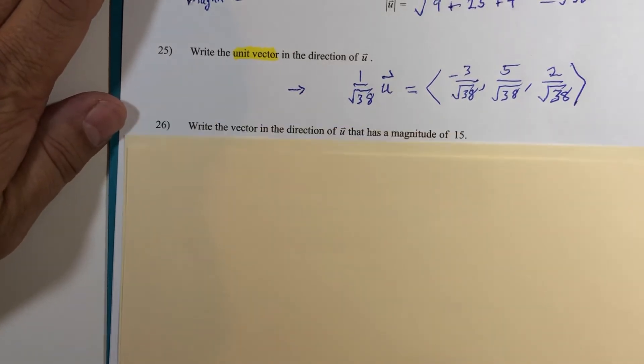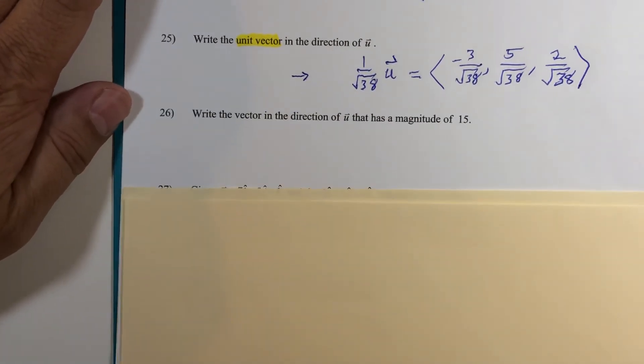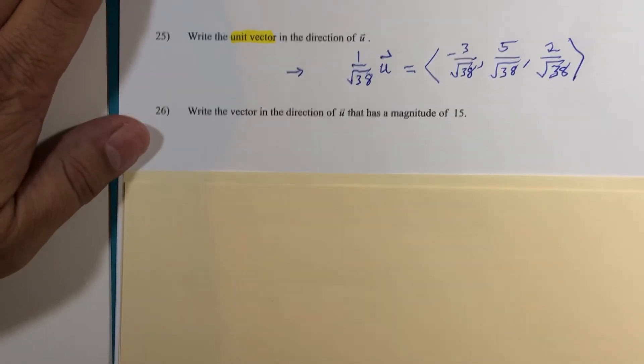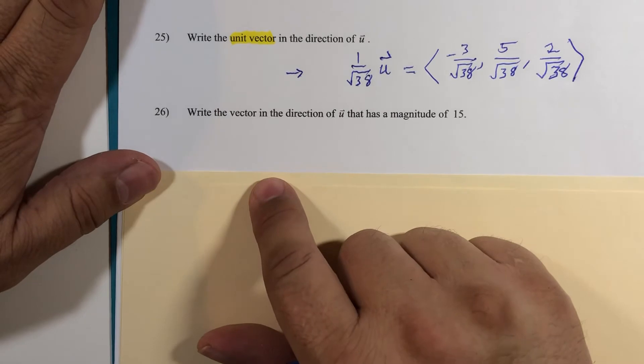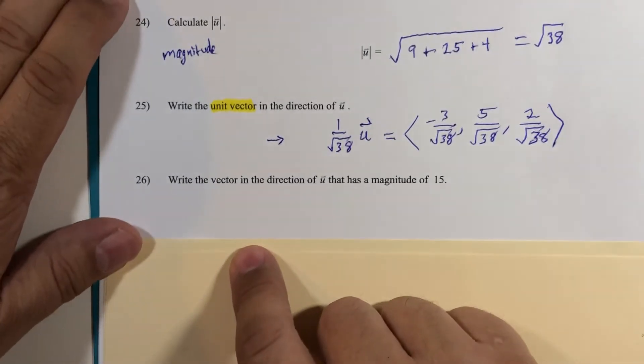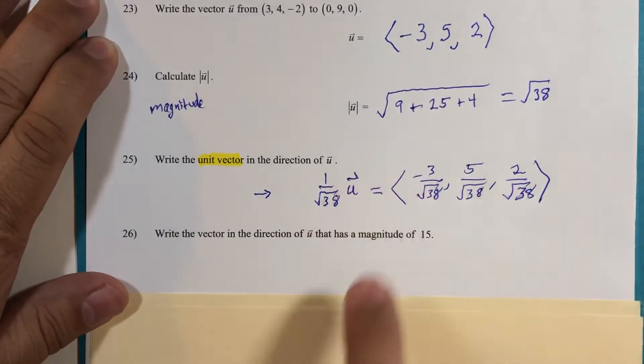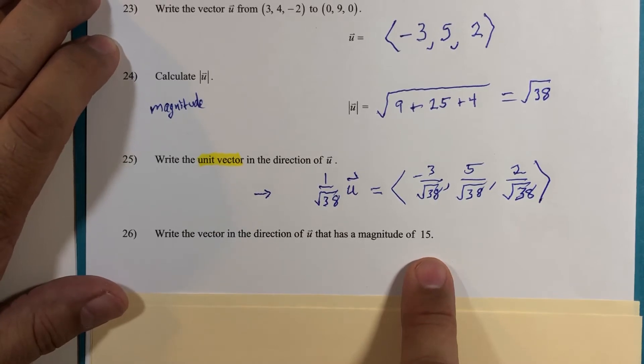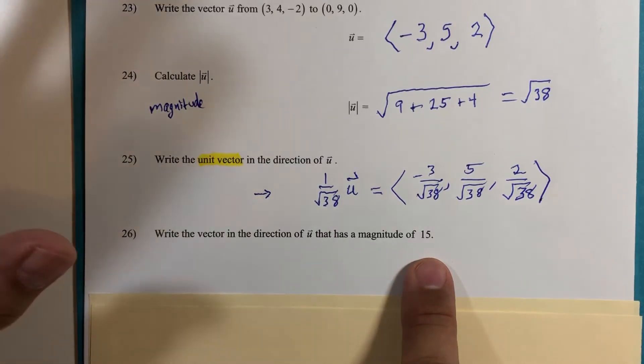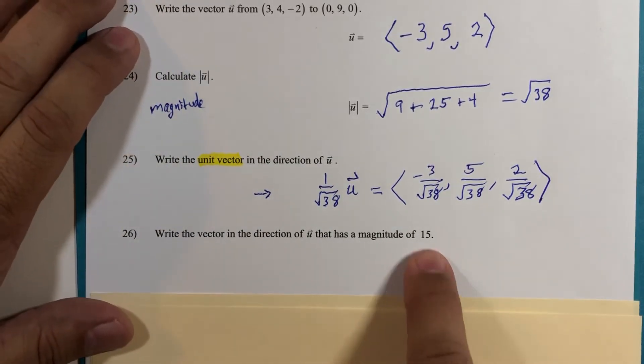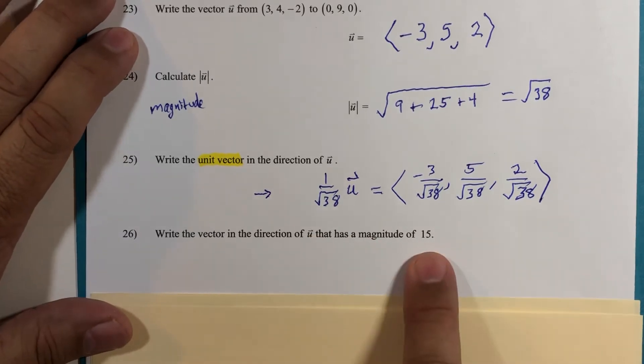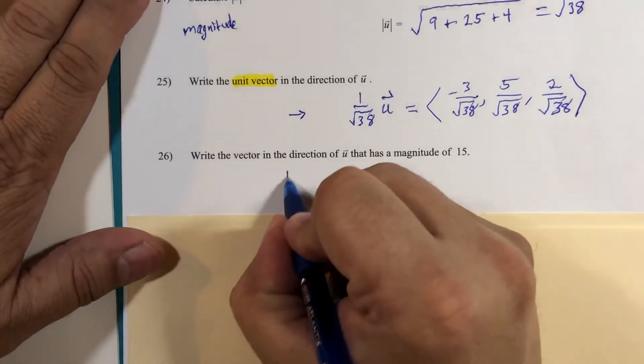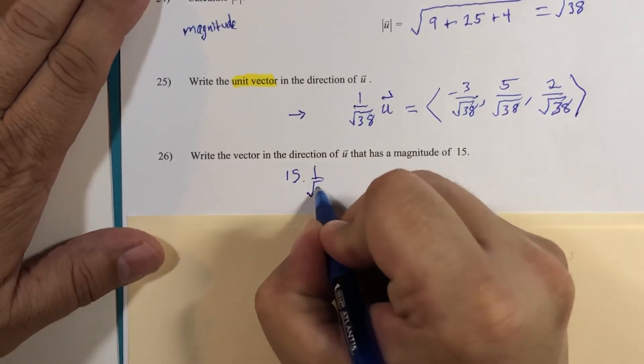So an adjustment: how do we write a vector that's in that same direction of <-3, 5, 2> but have it with a magnitude of exactly 15 units? I liken this to if you were programming a racing video game and you wanted the vehicle to have a specific speed or magnitude, you would start with a unit vector and then multiply by whatever the number is. So it's basically 15 times 1 over root 38 multiplied by vector u.